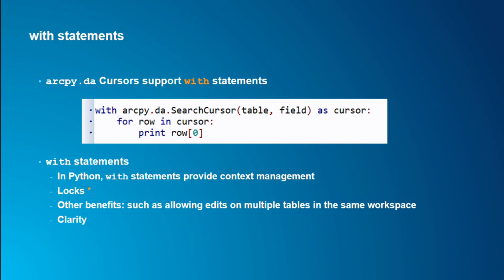When you see data access cursors being used, you'll typically see them in a with statement. If you're not familiar with with statements, they were added in Python 2.4 or 2.6 — they provide context management. When you have something in a with statement, certain behaviors come out of it for you. With the with statement, whether it sails through or fails, locks are taken care of for you, you don't have to worry about deleting cursor objects, and you can make multiple edits on tables in the same workspace.